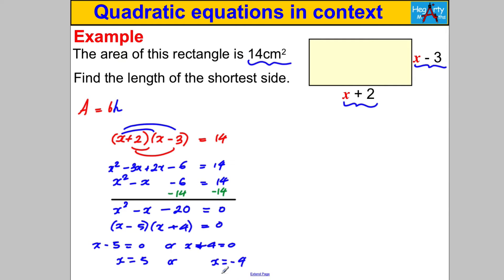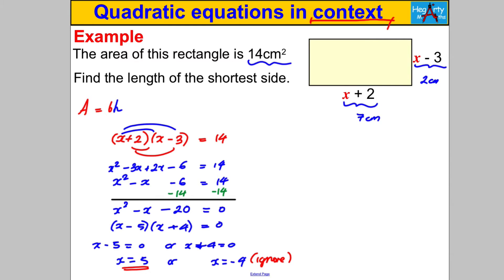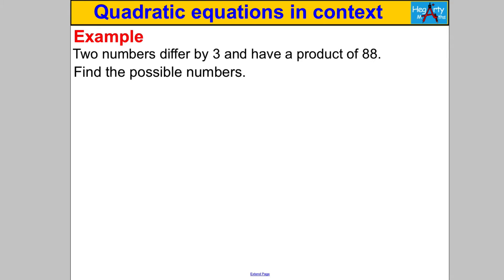Now here's where you have to think — can X be negative 4? It can't, because you can't have a negative length. So sometimes you get a solution which doesn't make sense in the context of the question, and we ignore that one. X = 5 is the answer. But be careful — we weren't asked for X; we were asked for the shortest side. Putting X = 5 back in: one side is 7 cm and the other is 2 cm, so the shortest side is 2 centimeters.